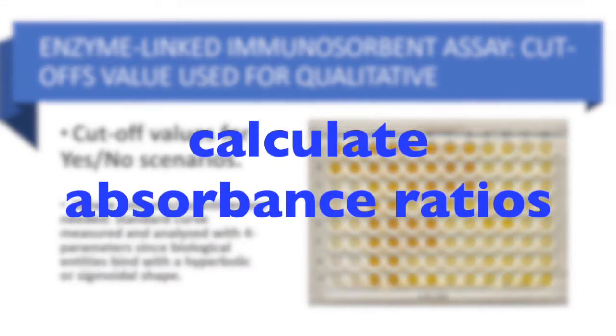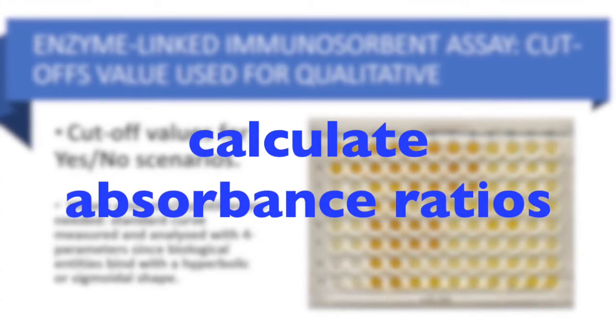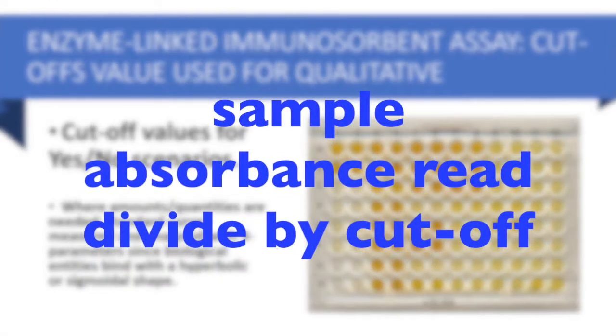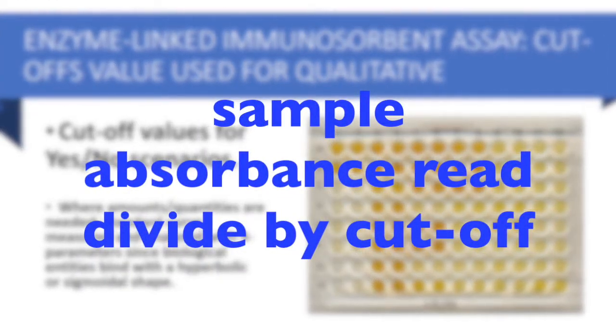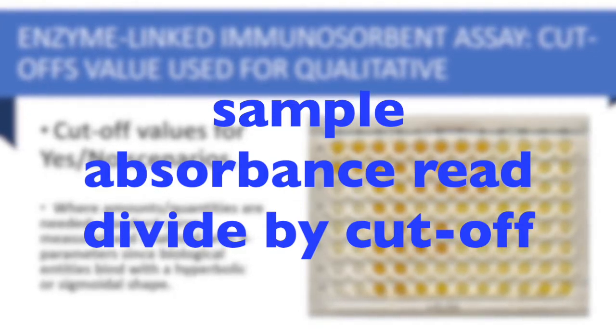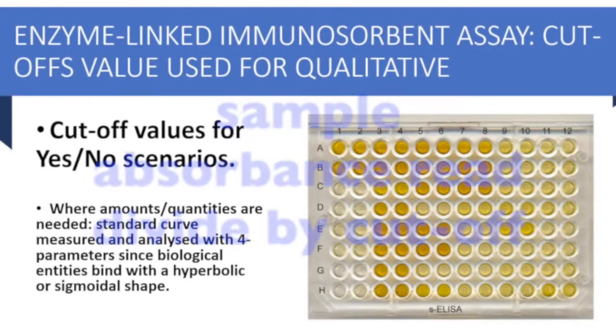In these scenarios, when you get your cut-off value, you actually work out a ratio. So whatever the reading was, you would divide your reading by the cut-off value. And it is the ratio of that that will tell you whether it's a yes or a no for your antibody-antigen that you're trying to detect.